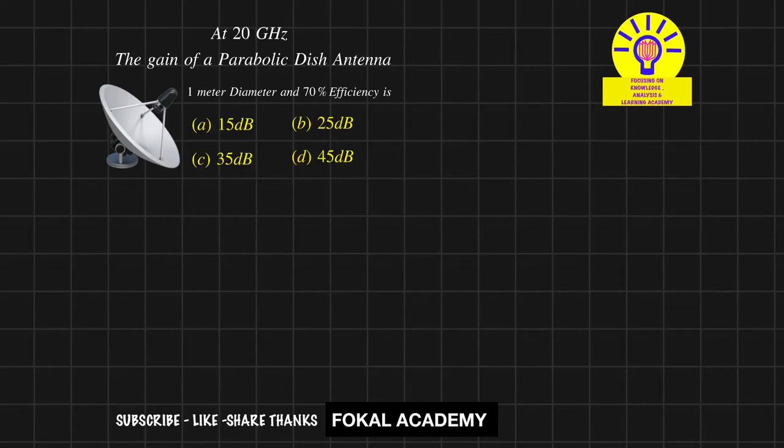See here, in this problem, a parabolic dish antenna is given. At 20 GHz, what is the gain of the parabolic dish antenna if its diameter is 1 meter and efficiency is 70%? How can you find the gain of the parabolic dish antenna? This is the problem.